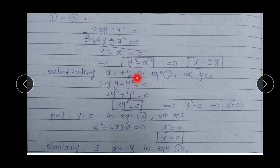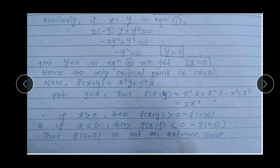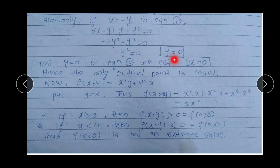Similarly, next we put x = −y into equation one: 2·(−y)·y + y² = 0, giving −2y² + y² = 0, which implies −y² = 0, so y = 0. When we put y = 0 into equation two, we get x = 0. So again the critical point is only (0, 0).